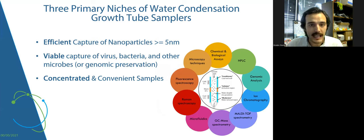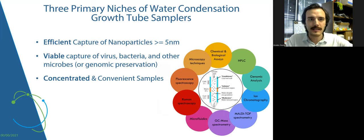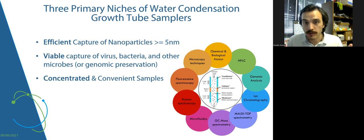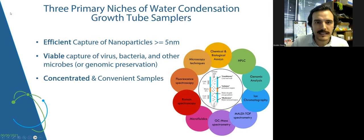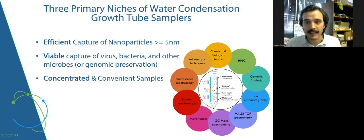The water condensation growth tube sampling technique that Aerosol Devices manufactures and licenses has three primary niches — three primary abilities that make it competitive compared to other technologies. The first of those three is efficient capture of nanoparticles, greater than or equal to five nanometers. The real range of particles we can sample across is from five nanometers to 10 microns — a very wide range, all with effectively even and high collection efficiency. You don't see a lot of more traditional techniques being able to sample into this low of the nanoparticle range with that high efficiency, which is useful not only in the bioaerosol world but in the semiconductor industry and in aerosol science and aerosol chemistry.